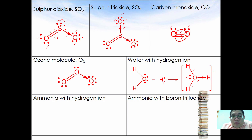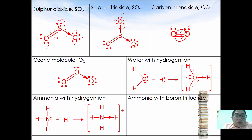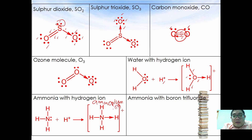The same applies to the formation of ammonium ion. Ammonia donates the electron pair from nitrogen to the hydrogen ion to form the ammonium ion, which is very common in the laboratory.